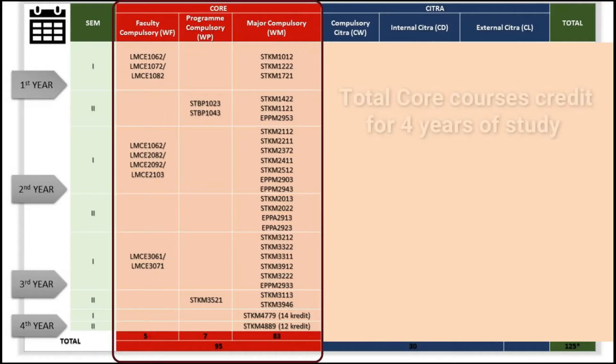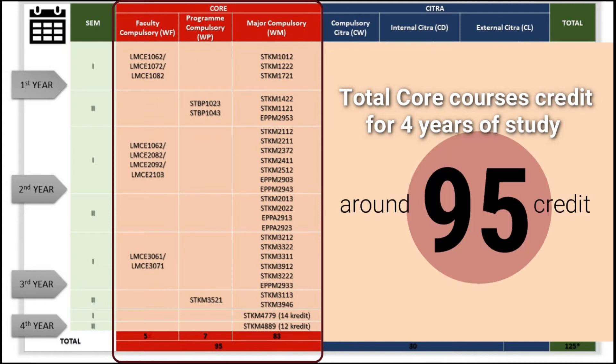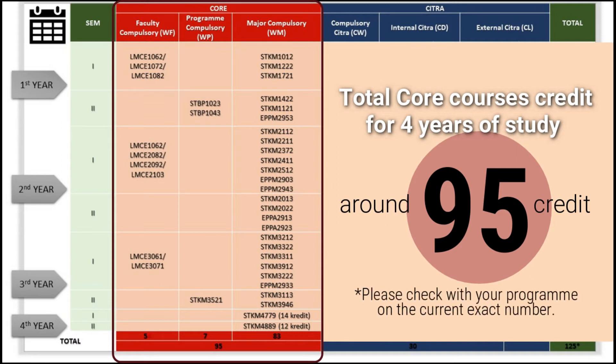The total core course credits for 4 years of study is around 95 credits. Please check with your program for the current exact credit number.